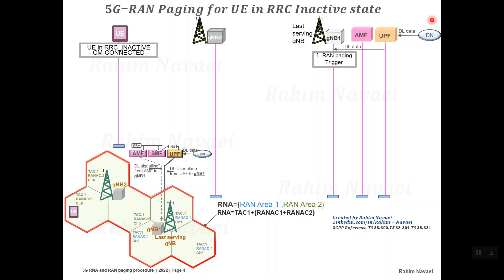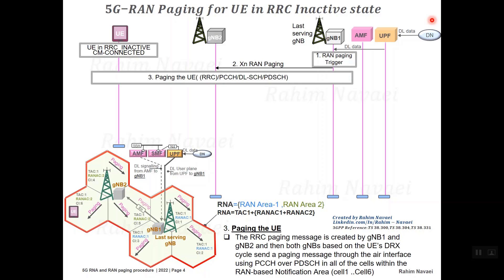In this example, the RAN paging message is sent to gNB2 via the Xn interface. The RRC paging message is prepared by both gNB1 and gNB2, and then sent to all cells within the RNA based on the UE's DRX cycle.